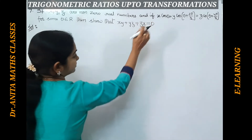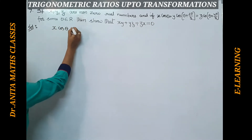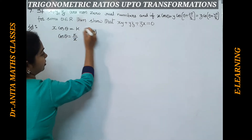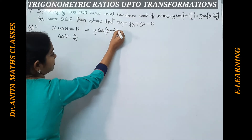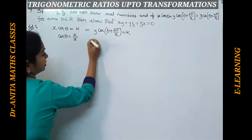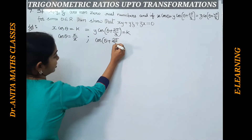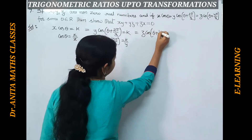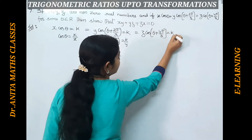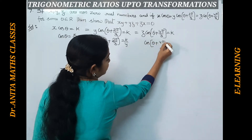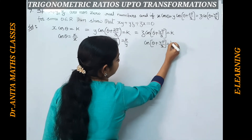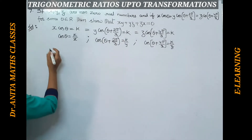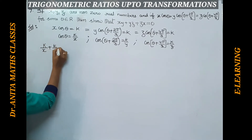Starting with the given condition, let us suppose the common value equals k. So x cos θ = k, which means cos θ = k/x. Similarly, y cos(θ + 2π/3) = k, so cos(θ + 2π/3) = k/y. And z cos(θ + 4π/3) = k, so cos(θ + 4π/3) = k/z. From these three, let us add all of them on the right-hand side.